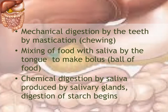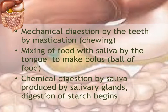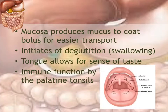Mechanical digestion starts in the mouth by mastication, which is chewing of food by the teeth. There is also mixing of food with saliva by the tongue and the walls of the oral cavity to make a bolus — a clump of food. Chemical digestion also occurs through enzymes inside the saliva, which is produced by the salivary glands, and the beginning of starch digestion occurs in the mouth. The mucosa produces mucus, which coats the bolus to make it slippery so it can pass more easily down the GI tract.